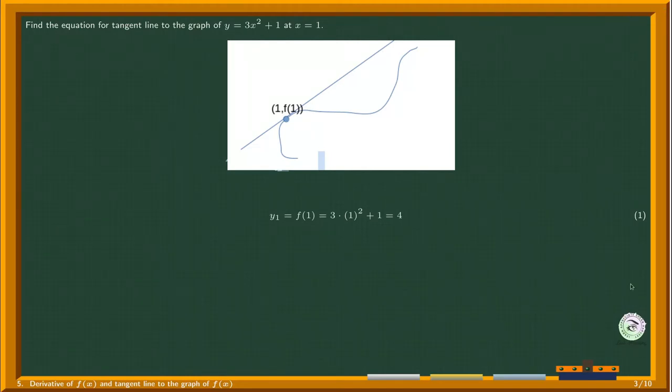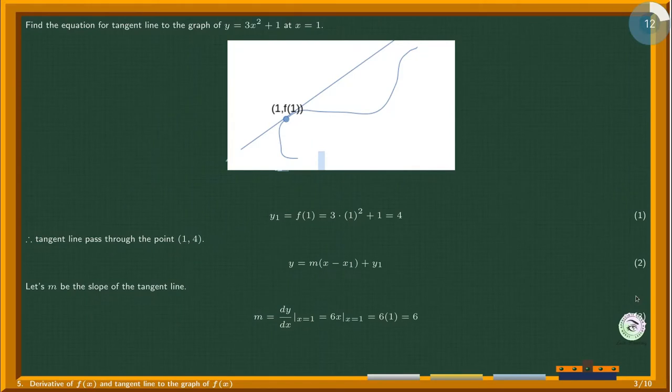When x equals 1, y equals 4, therefore the tangent line passes through the point (1, 4). The equation of a line whose slope is m and which passes through a point (x₁, y₁) is given by point-slope form. We already know a point, we just need the slope. Let m be the slope of the tangent line. The slope is given by the derivative at x equals 1. Differentiating 3x² plus 1 we get 6x. By substituting 1 for x we get 6. The slope of the tangent is 6.